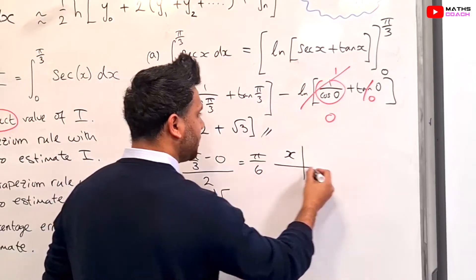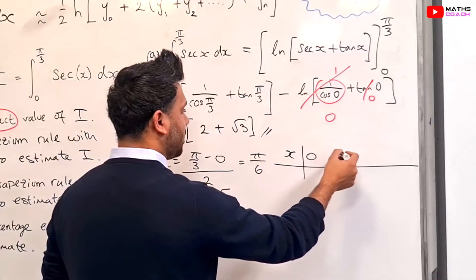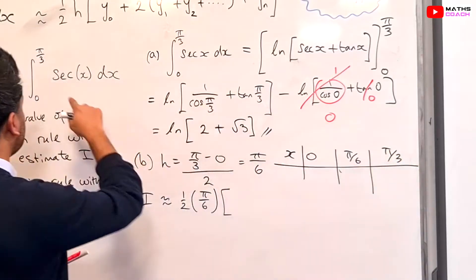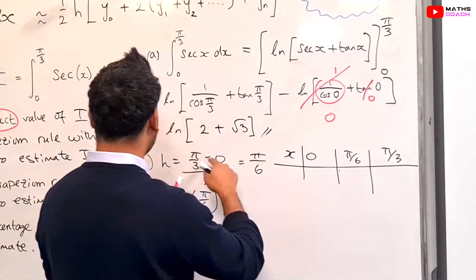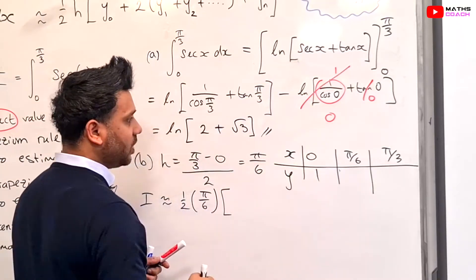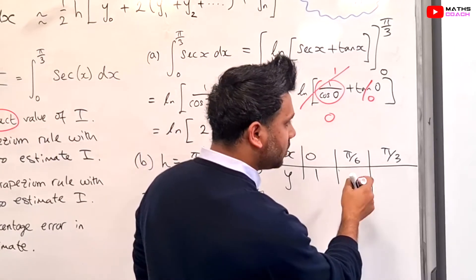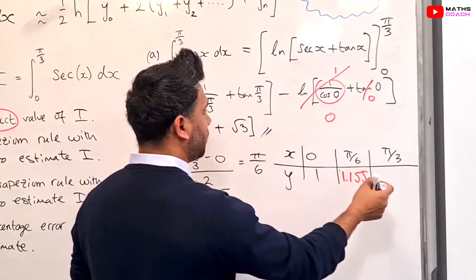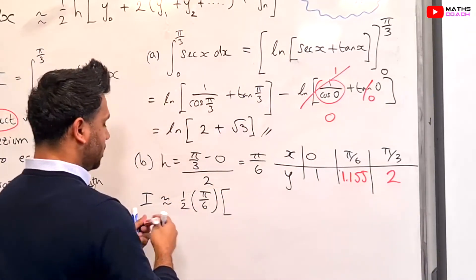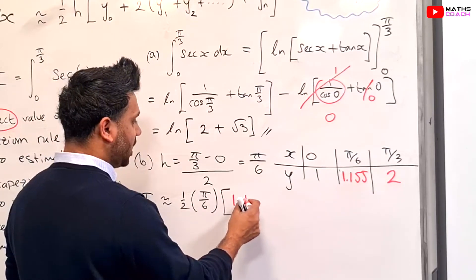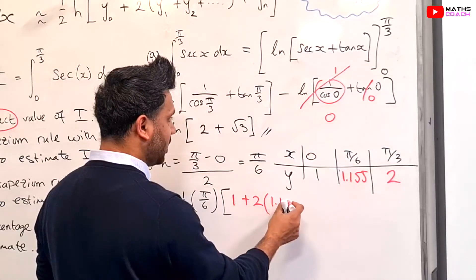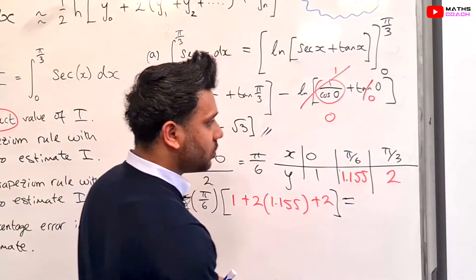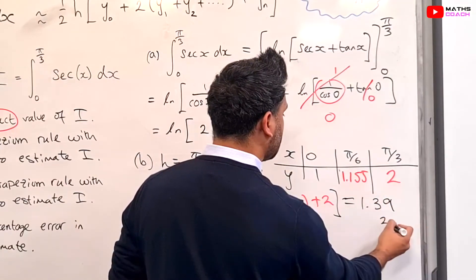To work out the y values we need a table of values. The first x value is 0, plus pi by 6 gives the second x value, and plus another pi by 6 gives pi by 3, where we stop at the top limit. Substituting in: sec of 0 is 1, sec of pi by 6 is 1.155 rounded to 3 decimal places, and sec of pi by 3 is 2. So our expression is: a half times pi by 6 times (1 + 2×1.155 + 2), which equals 1.39 rounded to two decimal places.